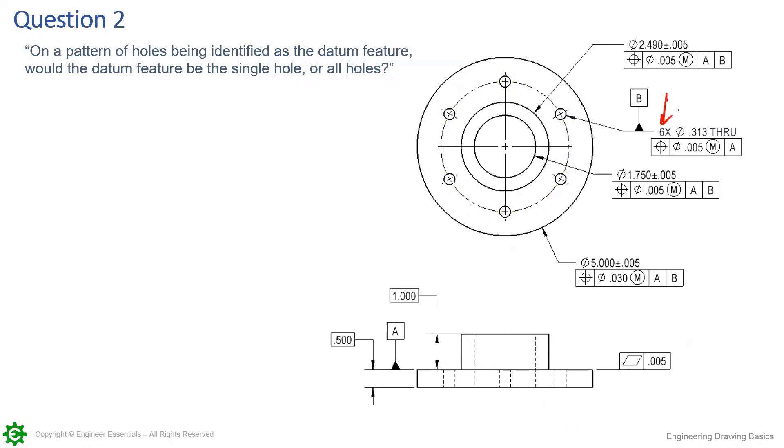So it's a pattern of six holes, and all six holes are datum features and create a single datum. Let's go through what that kind of means visually.